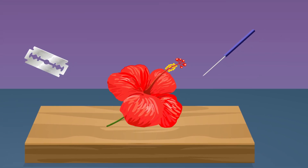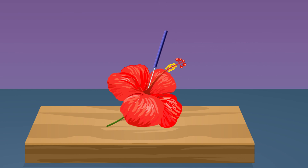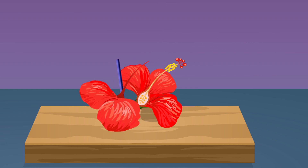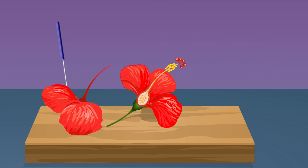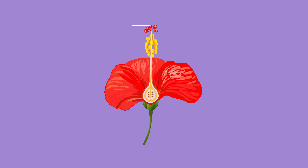Spread the two halves of the flower side by side using a needle. Place a white sheet of paper over the table. On the paper, arrange the two floral halves and observe the parts of the flower.